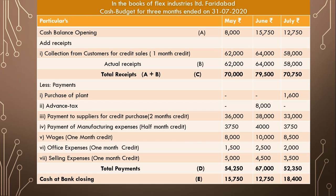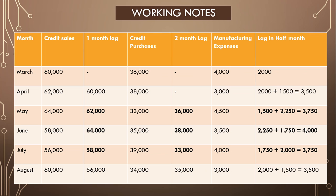This is the whole format — cash budget in the books of Flex Industries Limited, Faridabad, for three months ended on 31st July 2020. They have given us the opening cash balance of May, that is rupees 8,000. Then we will add cash receipts. Under cash receipts, we have collection from debtors. Since debtors are given one month credit, payment will come in the next month.